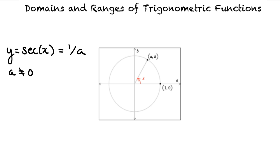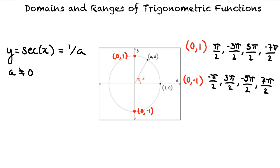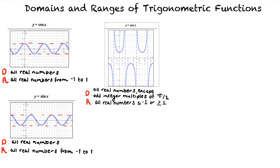Therefore, the angle x can be any value as long as A is not equal to 0. A is equal to 0 at the points 0 comma 1 and 0 comma negative 1 on the unit circle. Since the point 0 comma 1 corresponds to the angles pi over 2, negative 3 pi over 2, 5 pi over 2, negative 7 pi over 2, and so on, A is equal to 0 when x is an odd integer multiple of pi over 2. This tells us that the domain of y equals the secant of x is the set of all real numbers except odd integer multiples of pi over 2.